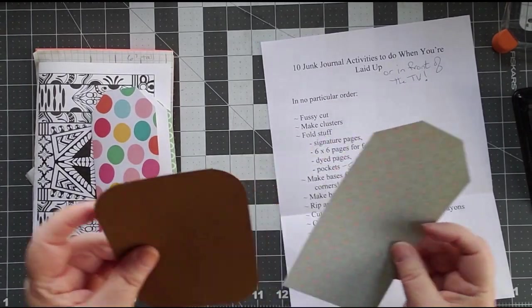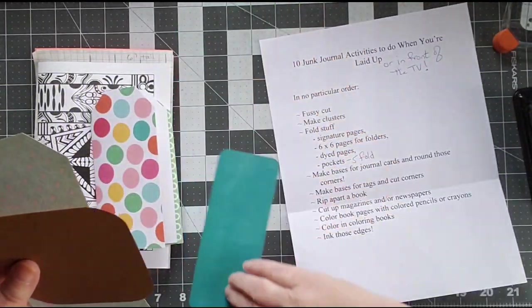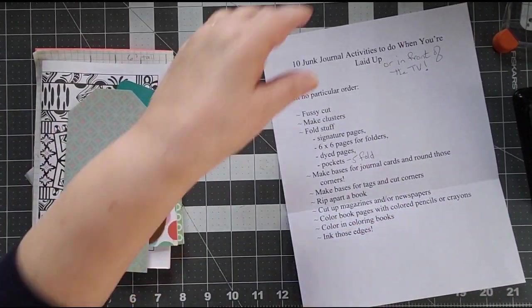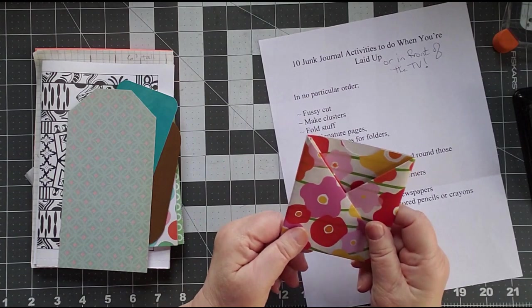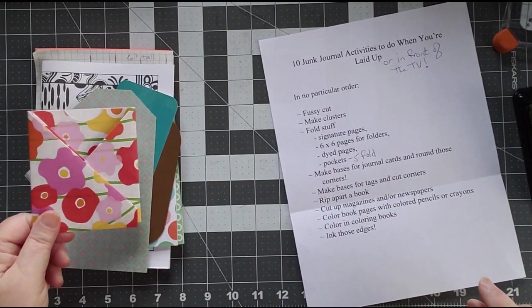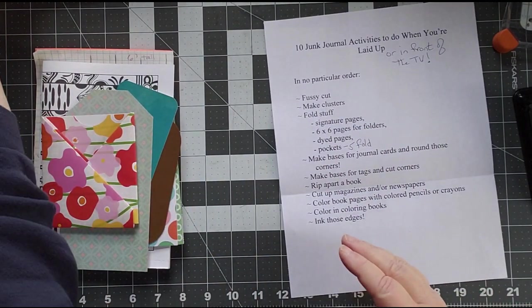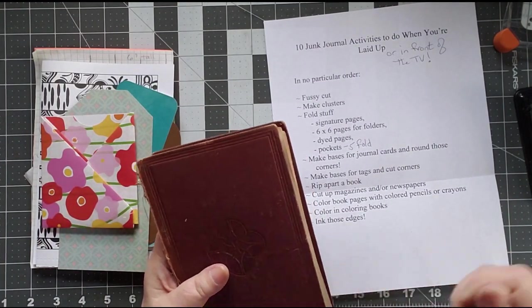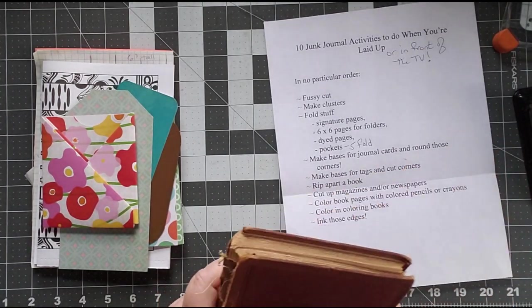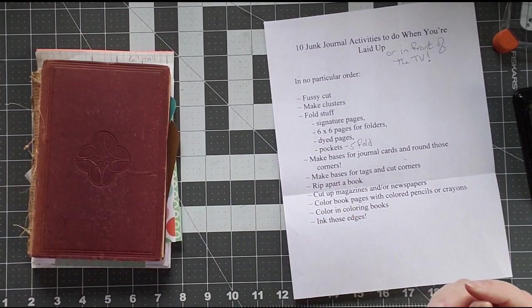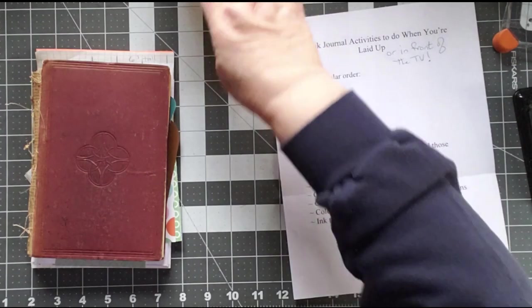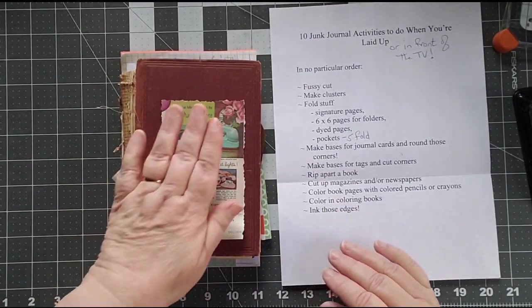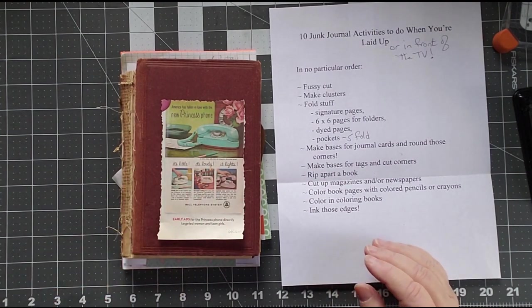You can make journal cards. Where's my other journal card? Journal cards for bases. You can make tags for bases. Oh, under the folding, you can also fold this. Remember, I'll put the link to how that goes down below. You can rip apart an entire book. Sit there and just, again, if you're good with a seam ripper and it's okay to do that with a seam ripper, do that. Cut up magazines or newspapers. Time to get them used up. Get those pieces ready to be used for some other thing.